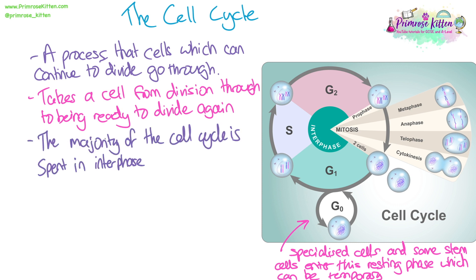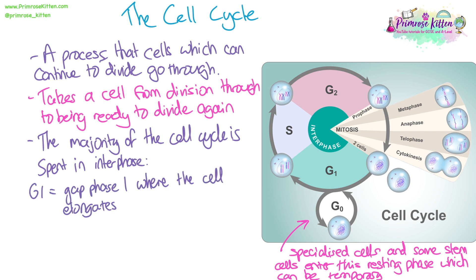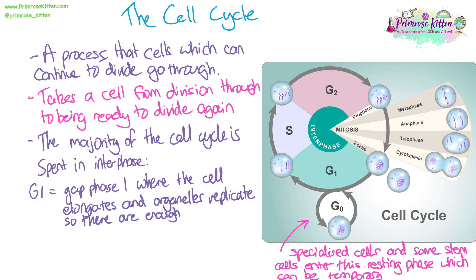The majority of the cell cycle is spent in interphase. The first part of interphase is G1, or gap phase one, where the cell elongates and all of the organelles replicate or double. This makes sure that there's enough space and enough organelles to be split between the two new cells that are going to be created.